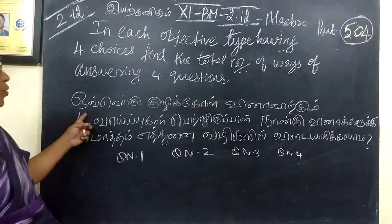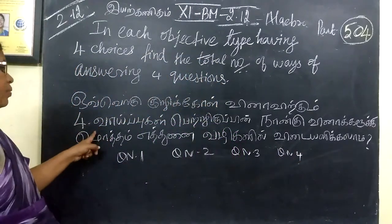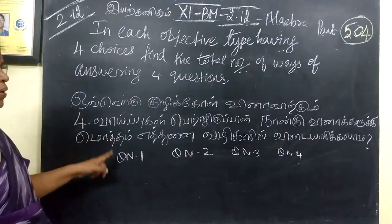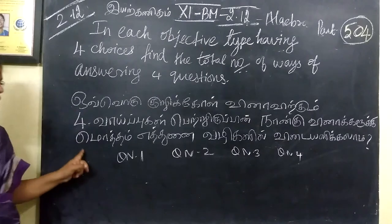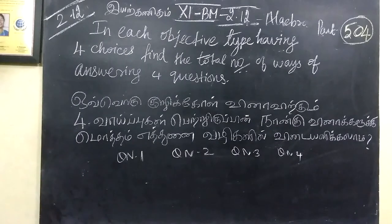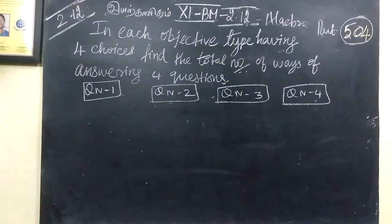To get the total number of ways of answering, there are 4 questions. For each question, the choices are 1, 2, 3, 4.